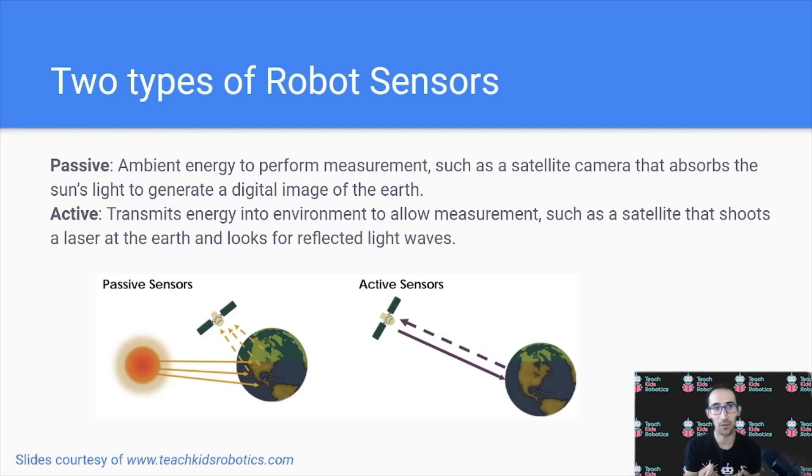There are two types of robot sensors, passive and active. A passive sensor relies on the ambient energy in the world around it to perform a measurement, such as a satellite camera that absorbs the sun's light to generate a digital image of the earth, or a thermometer that uses the ambient temperature. On the active side, we have sensors that transmit energy into the environment to allow for a measurement, such as a satellite that shoots a laser at the earth and looks for reflected waves to compute the distance, or lidar which shoots lasers into the world around it to determine distance.